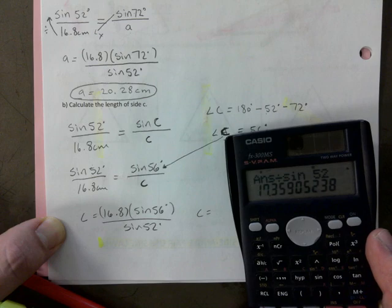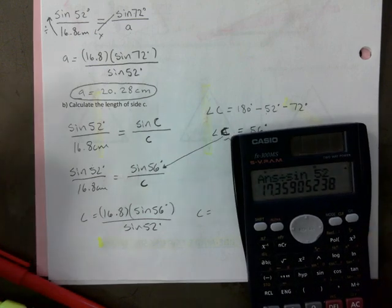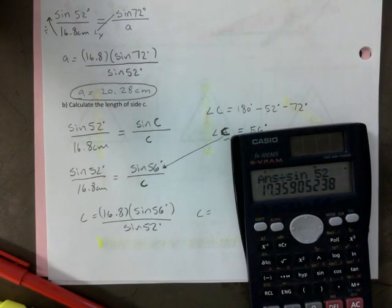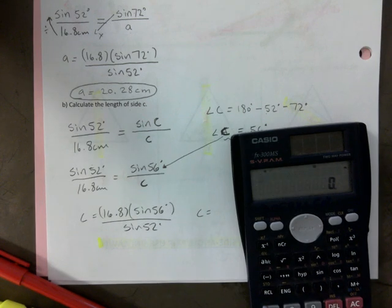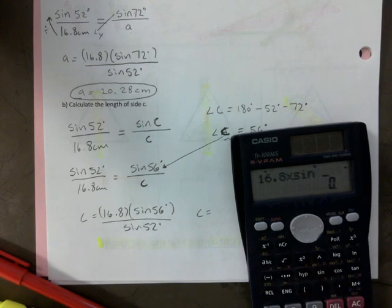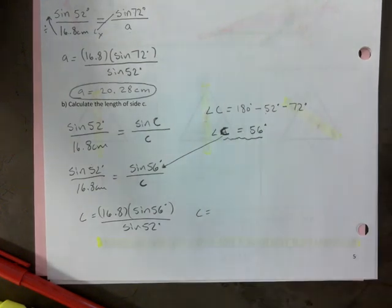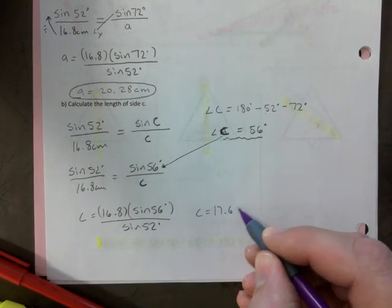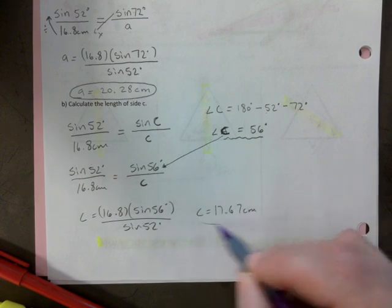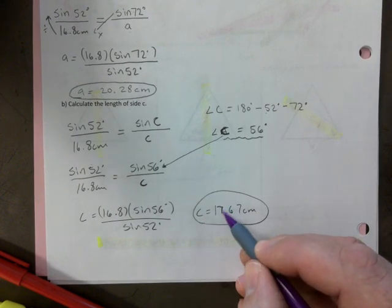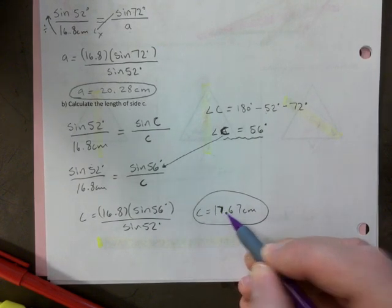Divided by sine of 52. And I get 17.36. I made a mistake. According to my key, this is supposed to be different. Let's try that one more time. Make sure you have your units if you want full marks. There we go.